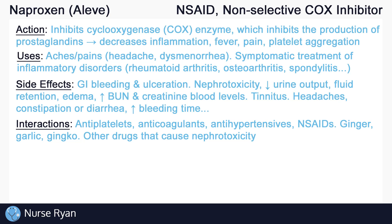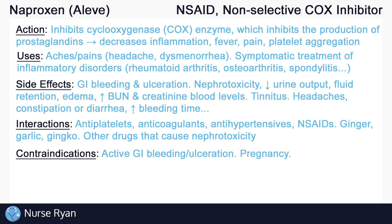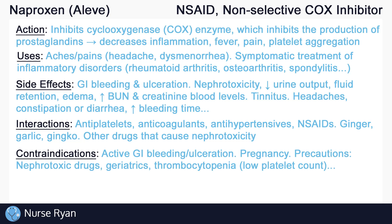Due to the side effects, naproxen is contraindicated in patients with active GI bleeding or ulceration. Naproxen should also be avoided during pregnancy, as it does cross the placental barrier and could possibly cause neonatal adverse effects. Exercise caution in patients taking nephrotoxic drugs, geriatric patients, and patients with a low platelet count, also known as thrombocytopenia.